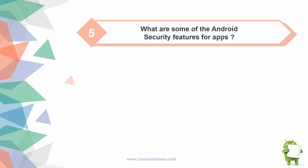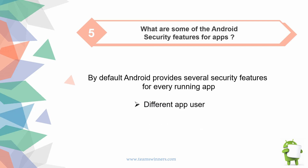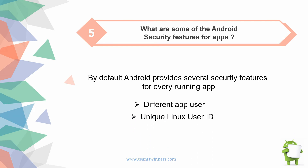What are some of the Android security features for apps? By default, Android provides several security features for every running app, such as a dedicated app user, a unique Linux user ID, a unique virtual machine (VM), and a separate process for each app.